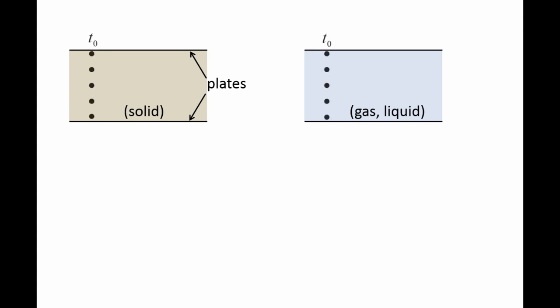At an initial time T0, five drops of dye are placed in a vertical line in the two materials. A force F is applied to the top plates, while the bottom plates are stationary. This force produces a shearing stress on the material between the two plates.